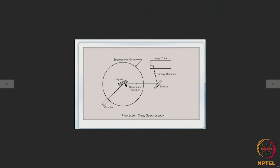If the primary X-radiation has wavelengths less than the K-absorption edge wavelength of the elements in the sample, then the K characteristic radiations of those elements will be produced, and those are known as fluorescent X-rays.